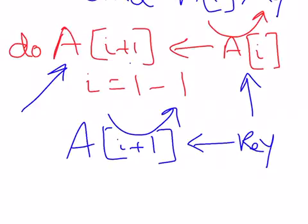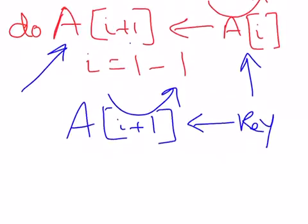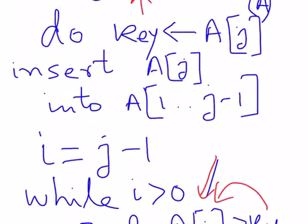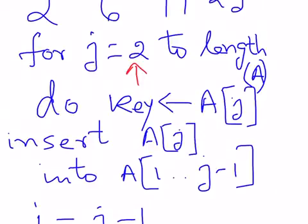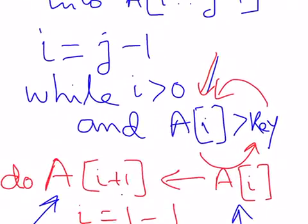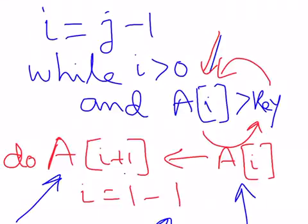So why is the complexity of the insertion sort order of n squared? Because you can see that there is an outer for loop for every element here. For j equals 2 to length A, we have to execute the outer for loop. And also here we are executing an inner for loop.